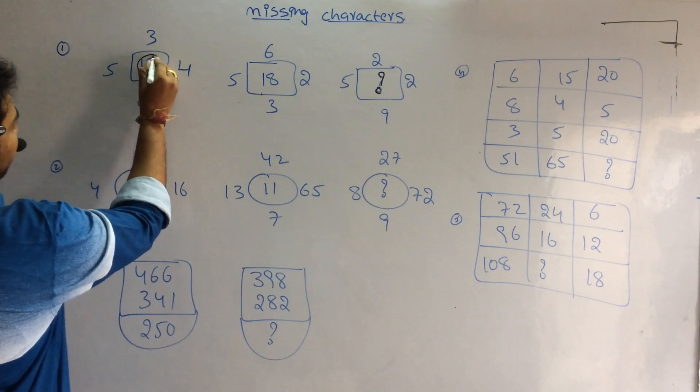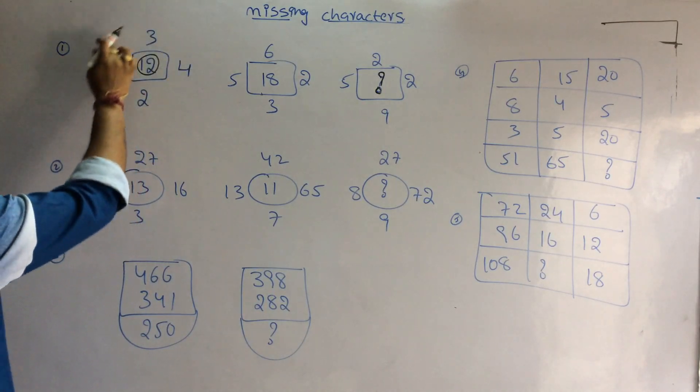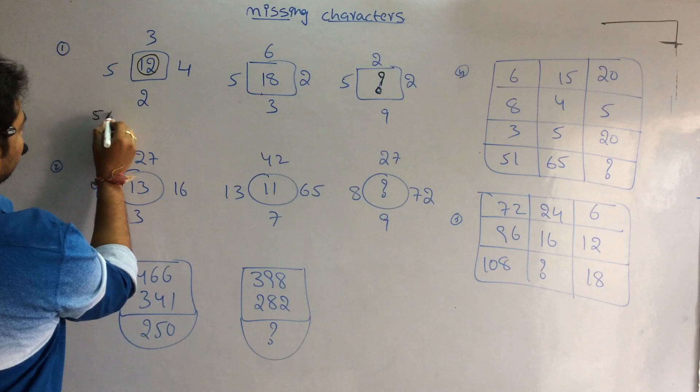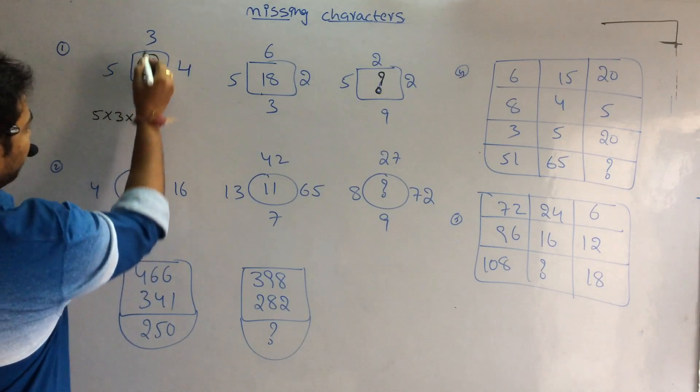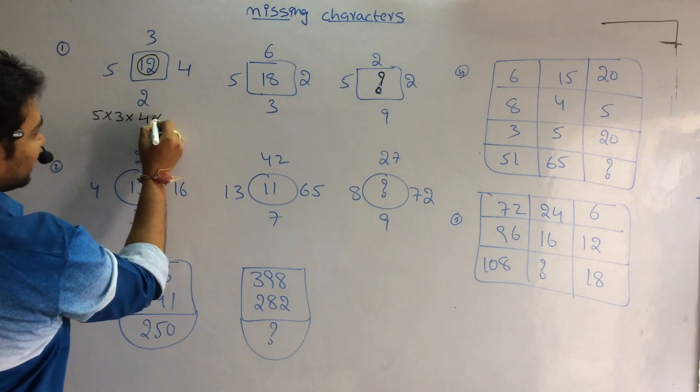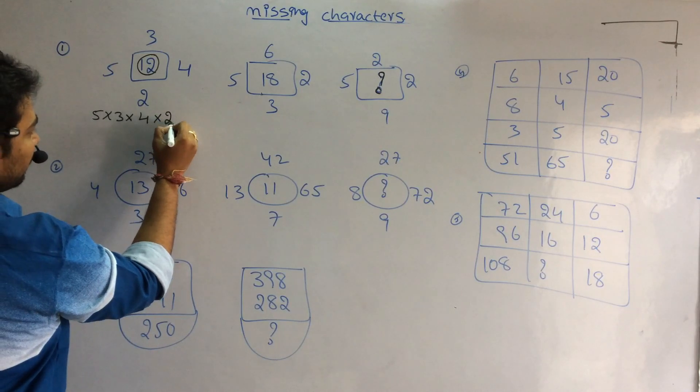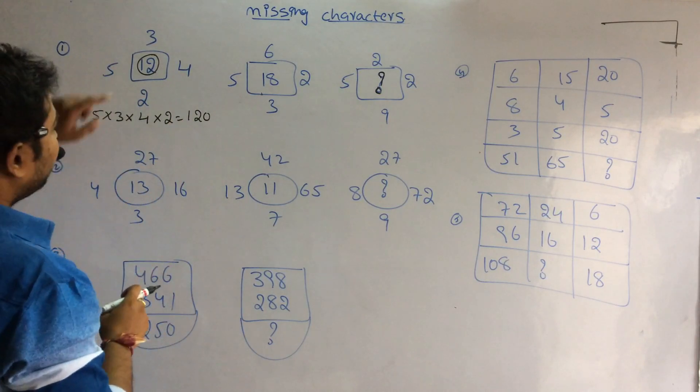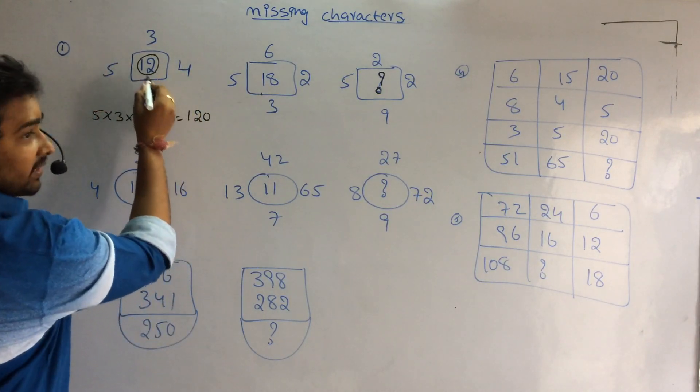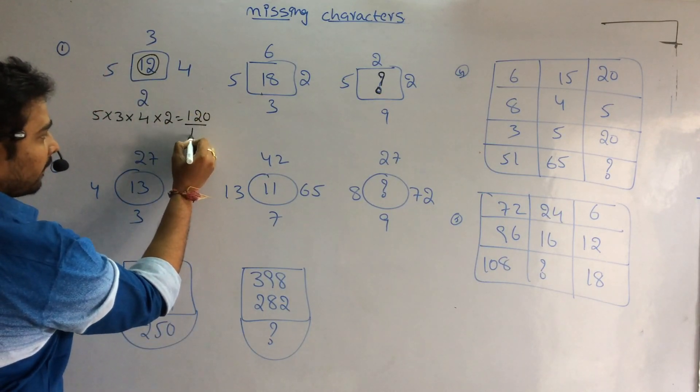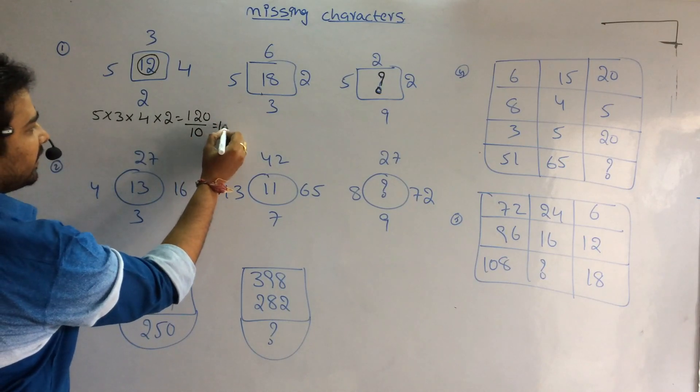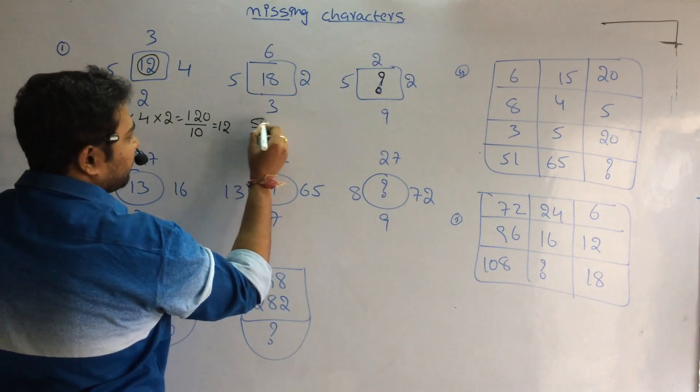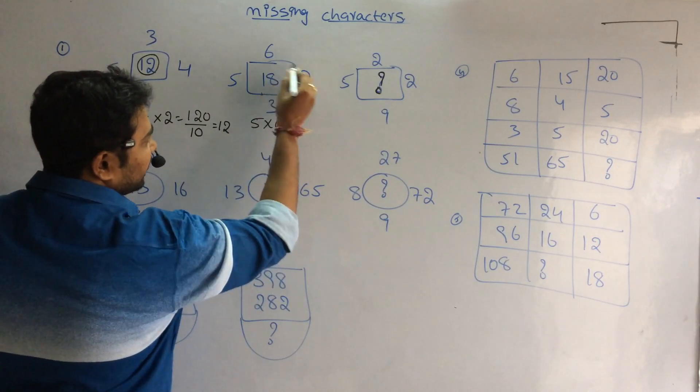How did 12 come from using these digits? So 5×3 is 15, 4×6 is 24, 2×6 is 12. The total multiple of all these numbers is 120, but here it is 12. How did 12 come from using 120? 120 divided by 10 is 12.